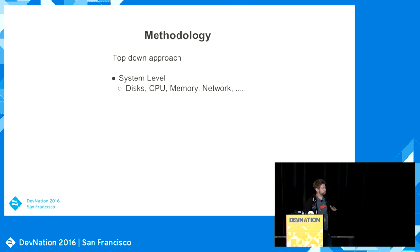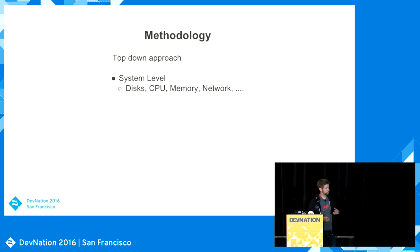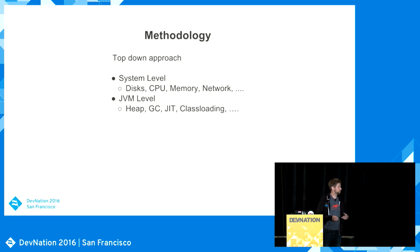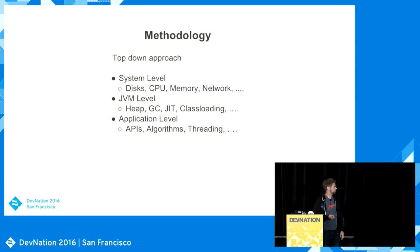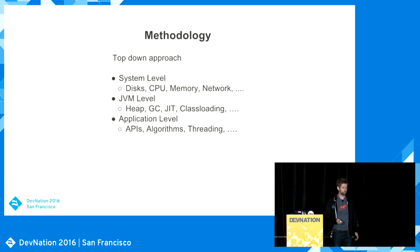We try to do a top-down approach. We use common Unix/Linux tools at the beginning to get an idea of the system level — like user CPU usage, etc. If we have a lot of IO wait, why do we have that? Can we change that? Then we look at the JVM level: are we creating a lot of garbage, doing class loading, are methods not being compiled? Then we look at our APIs, algorithms, and threading model — do we have enough threads, have you configured threads correctly for the machine?